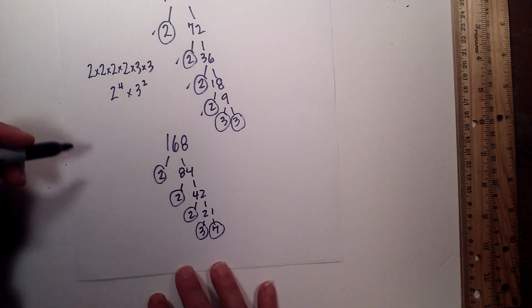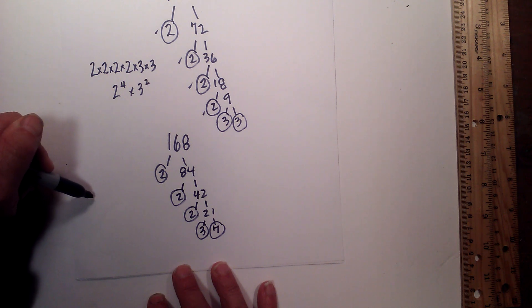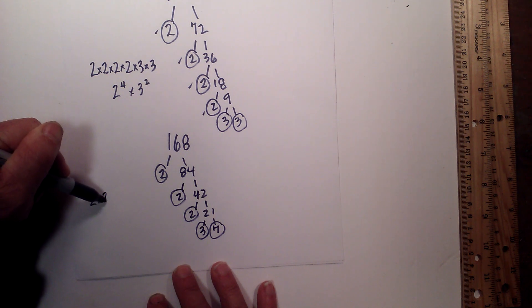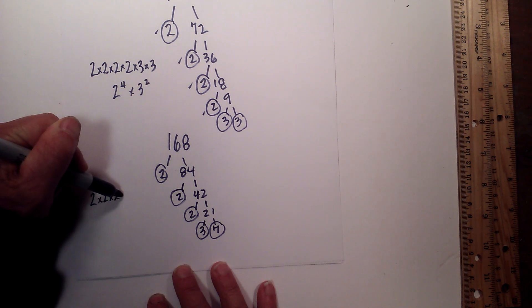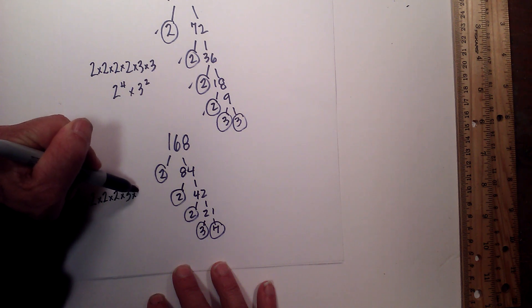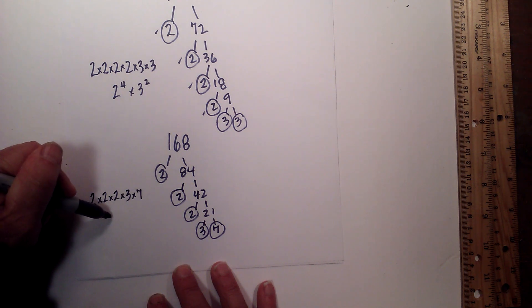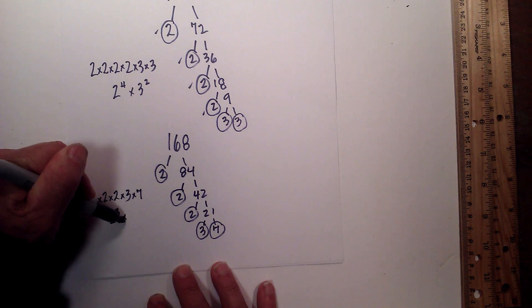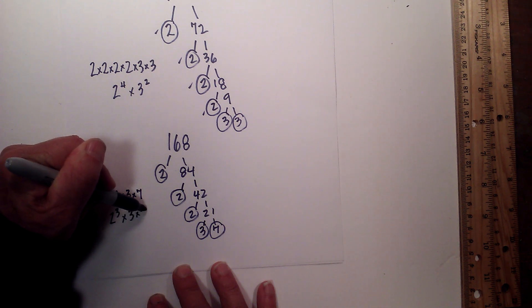So the prime factorization of 168 is 2 times 2 times 2 times 3 times 7. Or 2 to the 3 times 3 times 7.